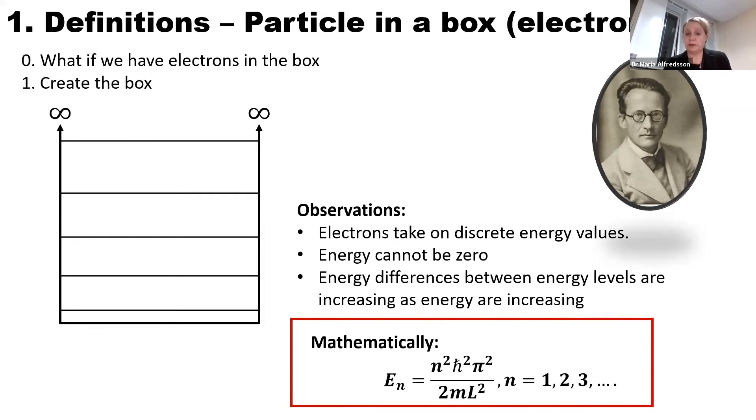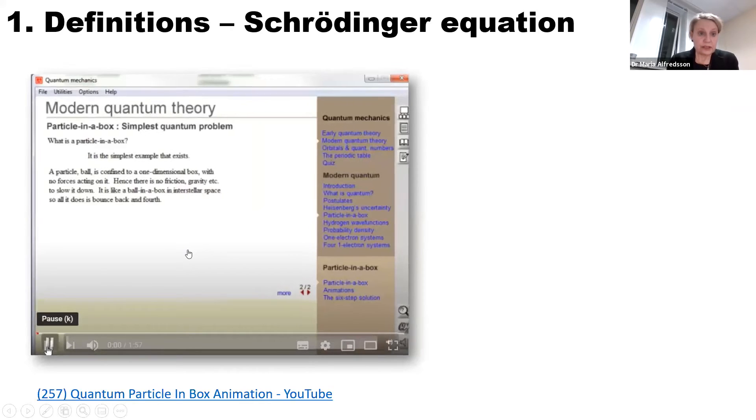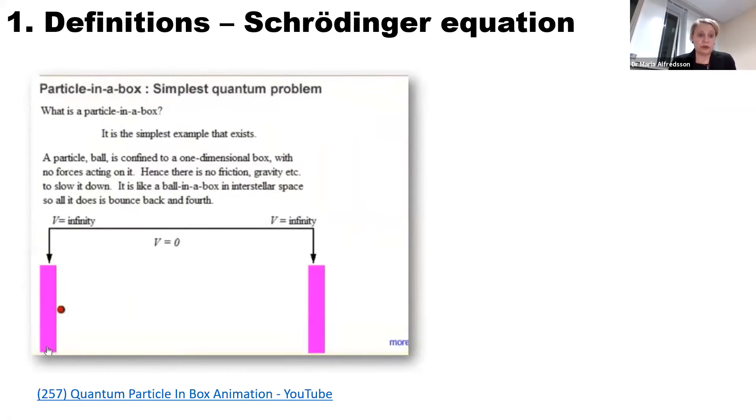It was also proposed that we can calculate mathematically the energy of these individual energy levels. As I said, this was derived in the beginning of the 1900s, and what came up was this model of the particle in the box. What I'm going to do now is be quiet, and I ask you to read and follow this video a little bit.